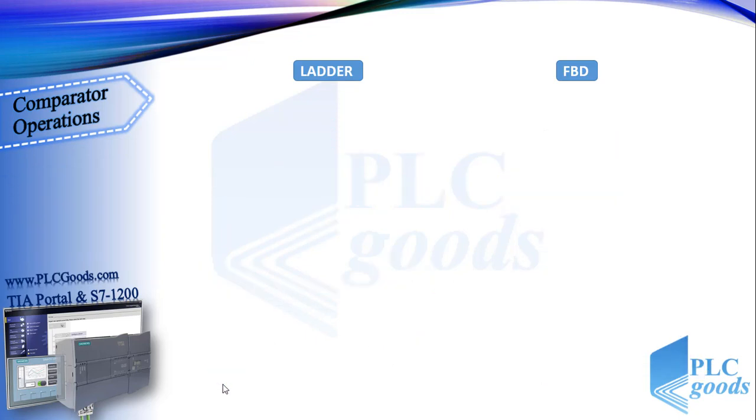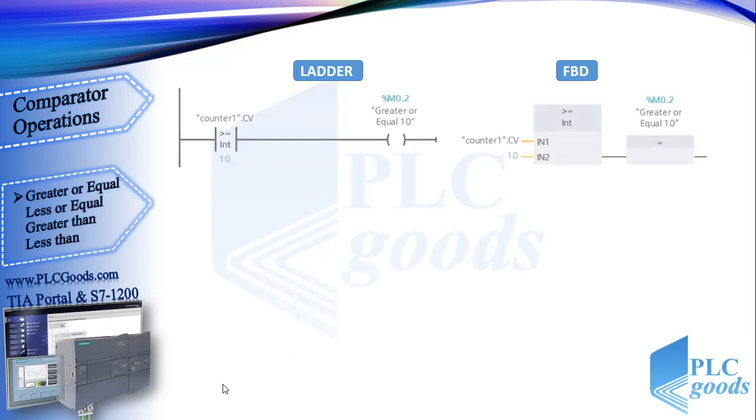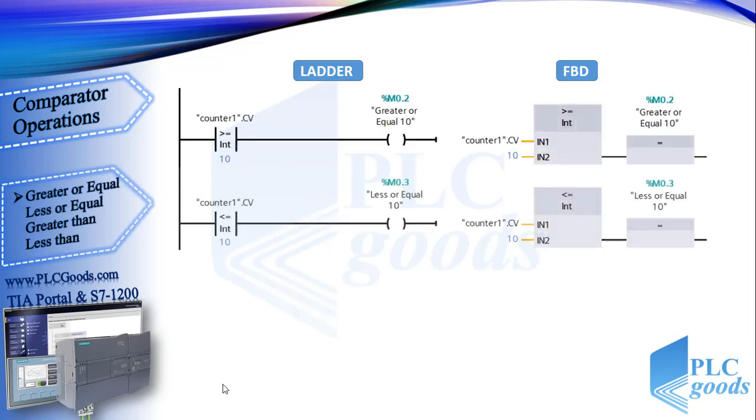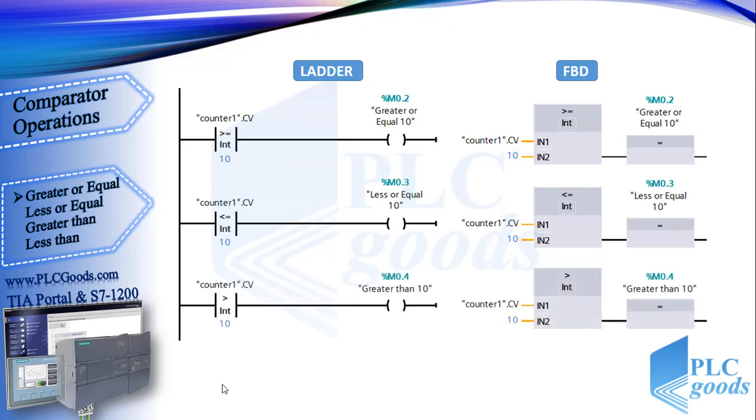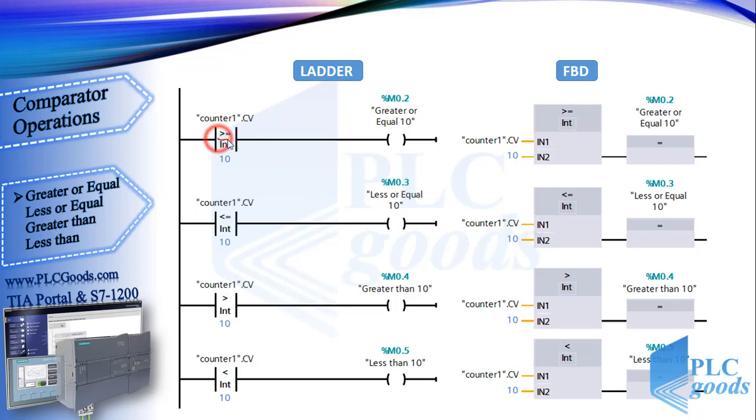Now let's see other comparator instructions: greater or equal, less or equal, greater than, and less than. We can detect each with its sign. For example, see the last line here. When the counter value is less than 10, this output will be on.